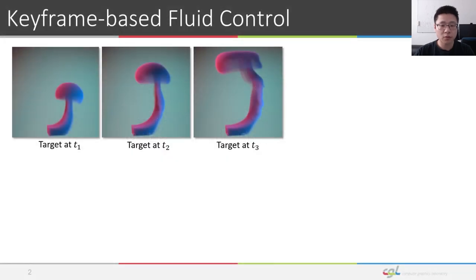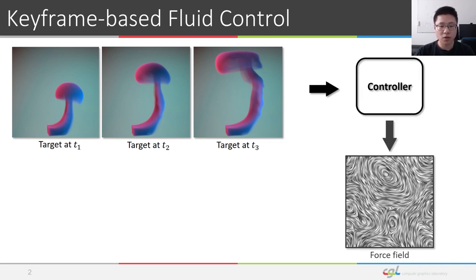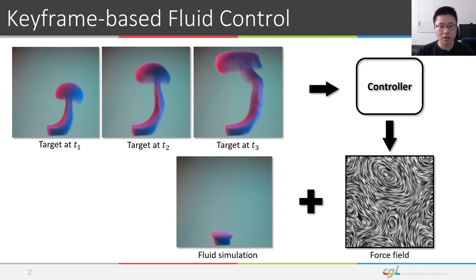In this work, we focus on keyframe-based fluid control. The fluid control pipeline works like this: given a set of sparsely defined target objectives, a set of external force fields is generated by the control algorithm. The force fields are then incorporated into a fluid simulation at each time step to create a fluid simulation that matches the input targets.